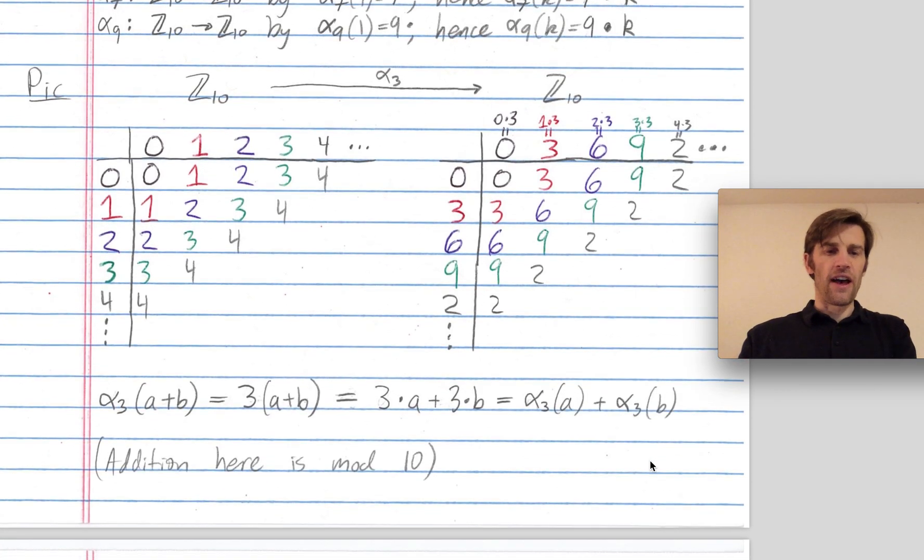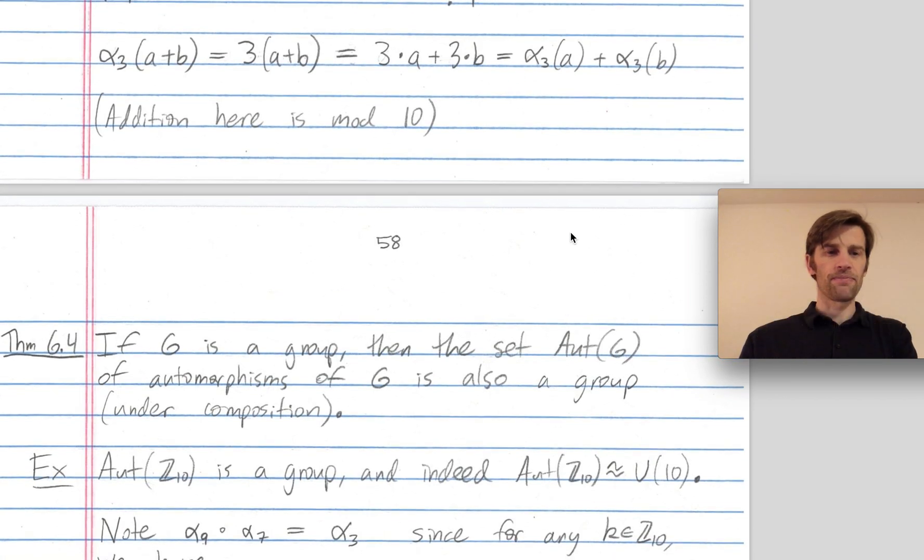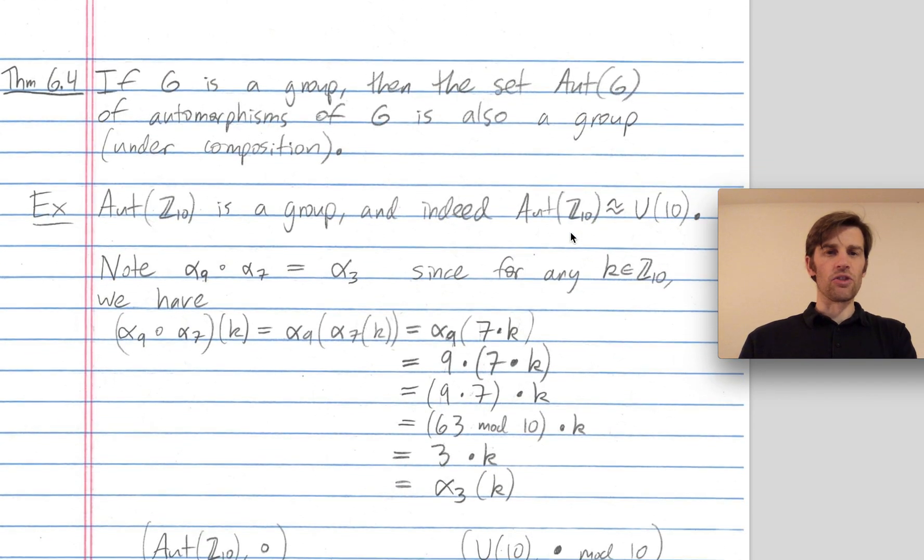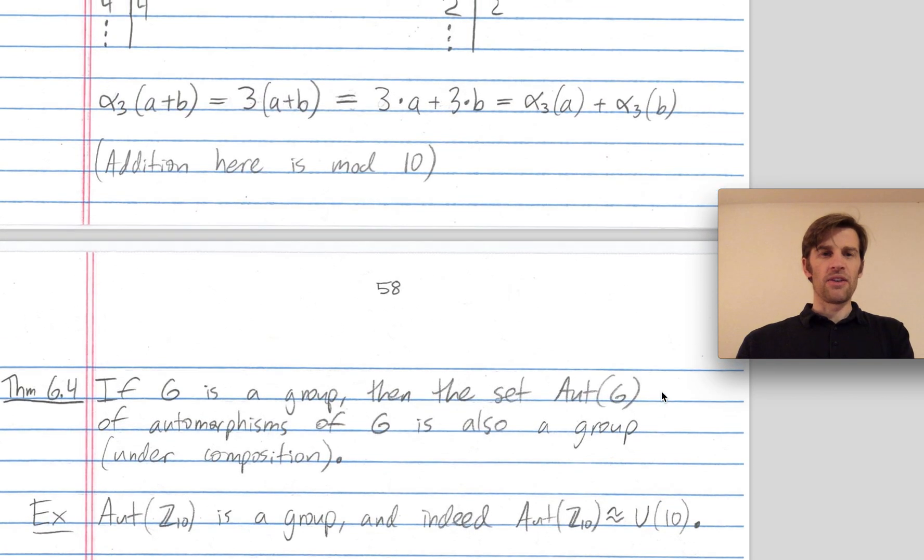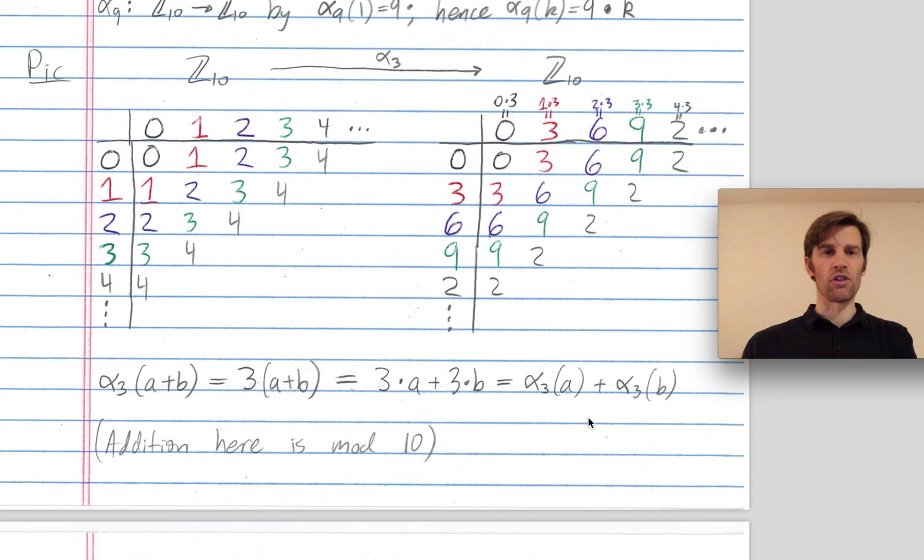The new fact that I wanted to share with you is theorem 6.4 in our book. It says if G is a group, then the collection Aut(G) of all automorphisms of G itself forms a group under function composition. In the case when G is Z mod 10, Aut(G) is the collection of all automorphisms of Z mod 10. I just told you there were four of them.